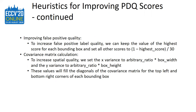The third is improving false positive quality: to increase false positive label quality, we keep the value of the highest score for each bounding box and set all other scores to 1 minus the highest score divided by 30. The last is covariance matrix calculation: to increase spatial quality, set the X variance to an arbitrary ratio times box width and the Y variance to an arbitrary ratio times box height. These values populate the diagonal of the covariance matrix for the top-left and bottom-right corners of each bounding box.